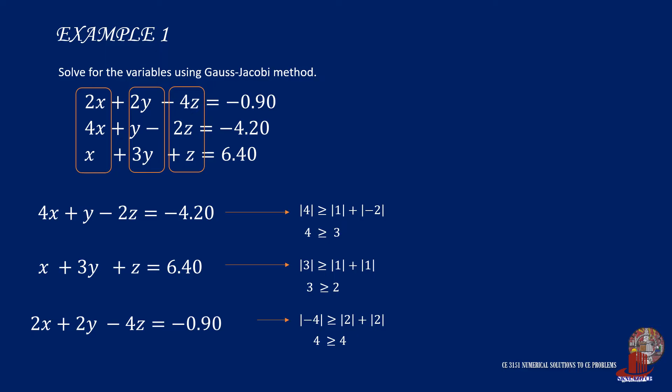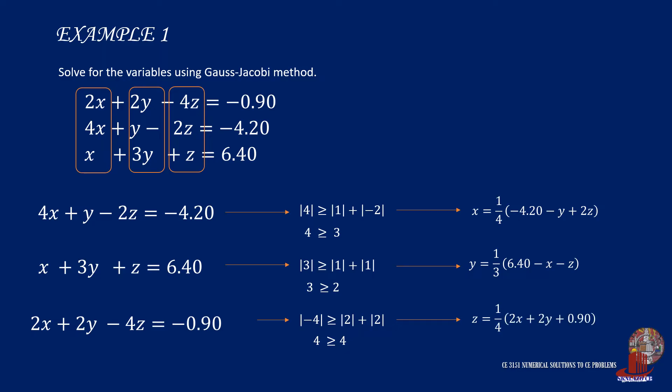Now that the system of linear equations has passed the checks for iteration, we can isolate each variable. From the first equation, x is taken as a quarter of negative 4.2 less y plus 2z. The second equation gives y as a third of 6.4 minus x minus z. Then the last equation takes z as equal to one fourth of 2x plus 2y plus 0.9.